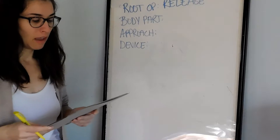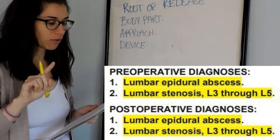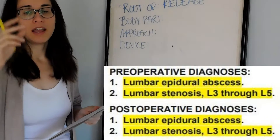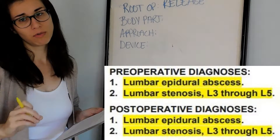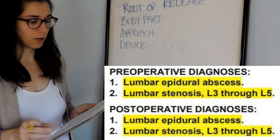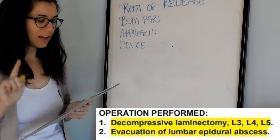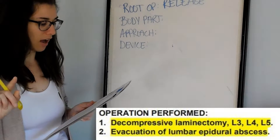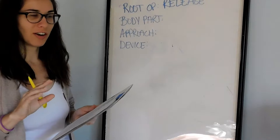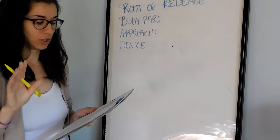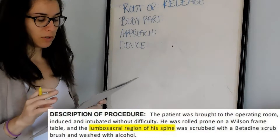Pre-operative diagnosis: lumbar epidural abscess, lumbar stenosis L3 through L5 — so we're talking about the third through fifth lumbar vertebrae. Post-operative diagnosis is exactly the same. Operation performed: decompressive laminectomy L3, L4, L5, and also evacuation of lumbar epidural abscess. This is where I start to see why I think it's release over excision.